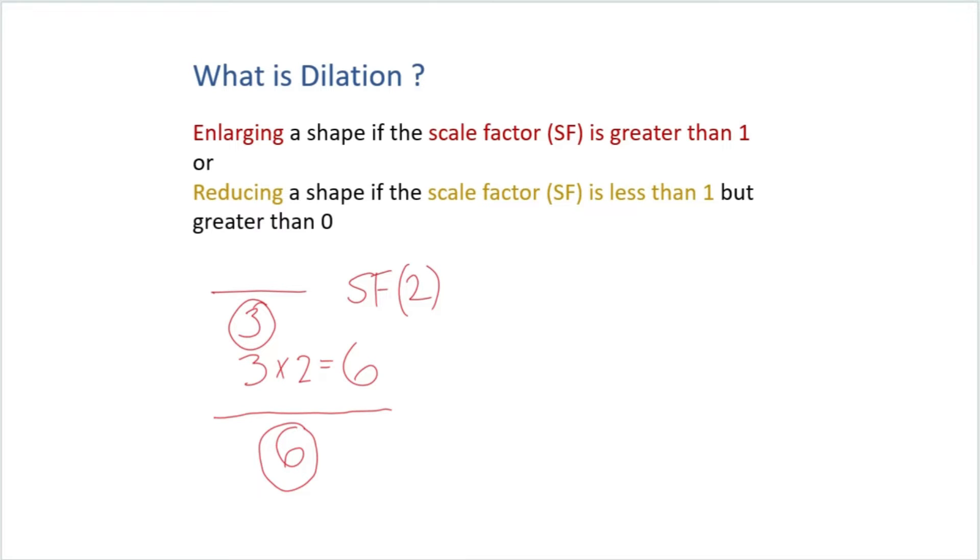So what if we had a line that was six and I had a scale factor that was one third. So again, I'm going to multiply my scale factor times the original position and this equals six over three, which is two. So in this case, my line shrinks to two. So that's basically what dilation is. It enlarges if a scale factor is greater than one and it shrinks or reduces if the scale factor is less than one, but greater than zero.